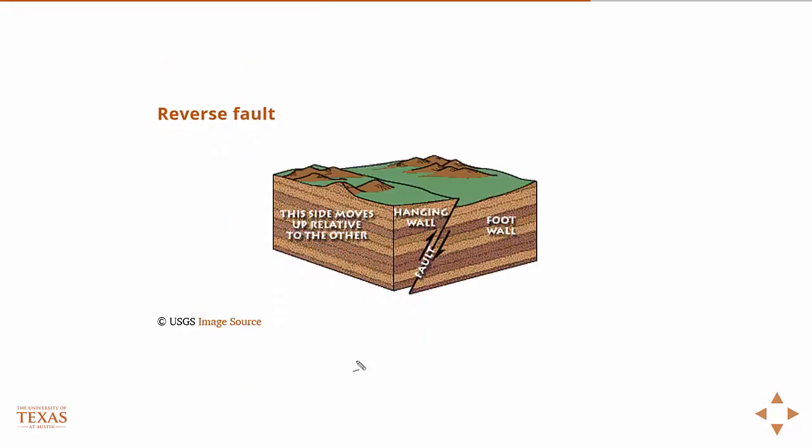So sort of the opposite of a normal fault is a reverse fault, and the same idea. If this were floating in space, and I fix the footwall, and then I apply gravity, but I apply it in the reverse direction, which way does the hanging wall move? So if you can just remember that, normal gravity, reverse gravity, which way is the hanging wall going to move under those conditions? And that's how you characterize the two faults.